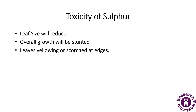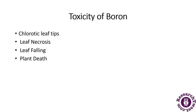In sulfur toxicity, the size of the leaf will reduce and overall growth will be stunted — the plant will be short and leaves will not be normal size. There will be yellowing or scorched edges, with rolled or scorched edges on the leaves. In boron toxicity, there is chlorotic leaf tips, leaf necrosis, and leaf falling, which can lead to plant death.